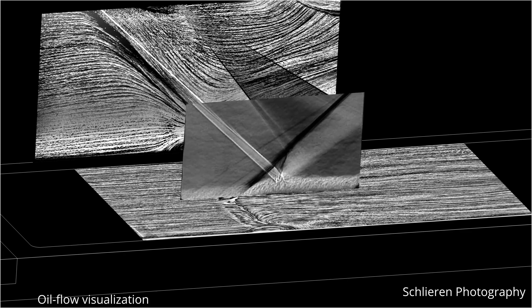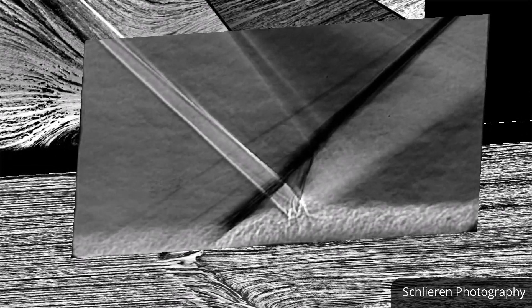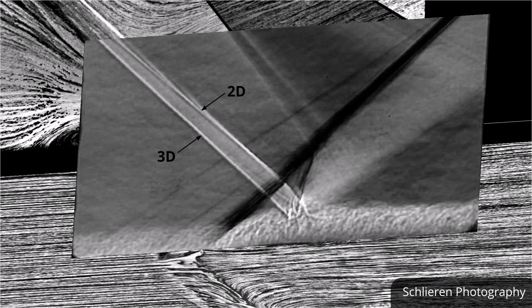When using measurement techniques that integrate over the span of the tunnel such as Schlieren images, traces of both interactions can be detected. The dominant flow features are from the 2D interaction, but the upstream influence of the 3D interaction can also clearly be seen.